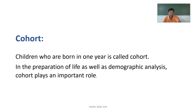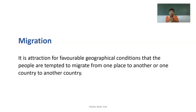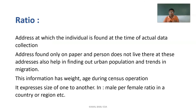Migration means movement from one place to another when geographical conditions attract people. People travel from rural to urban areas or from one country to another due to favorable conditions. When people migrate within the same country, there is no change in national population. When people migrate between countries, significant population changes can occur.